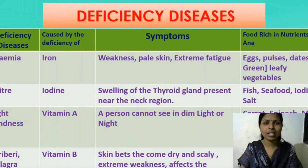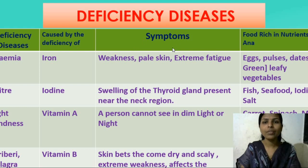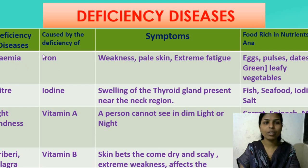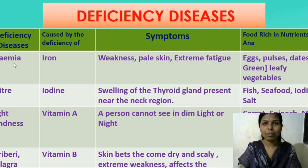Let's see the Deficiency Diseases. Here I have shown one table of Deficiency Diseases. The first column is the Deficiency Disease, second is caused by deficiency of, third is symptoms, and last is food rich in nutrients. The first one is Anemia. This disease is caused due to the deficiency of iron. Symptoms of anemia are weakness, pale skin, or extreme fatigue. To avoid anemia, we need foods rich in iron such as eggs, pulses, dates, and green leafy vegetables.